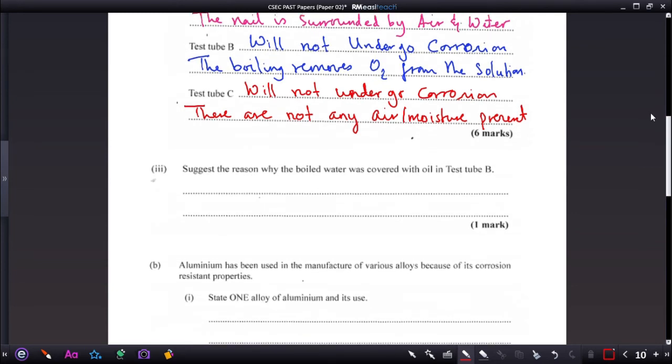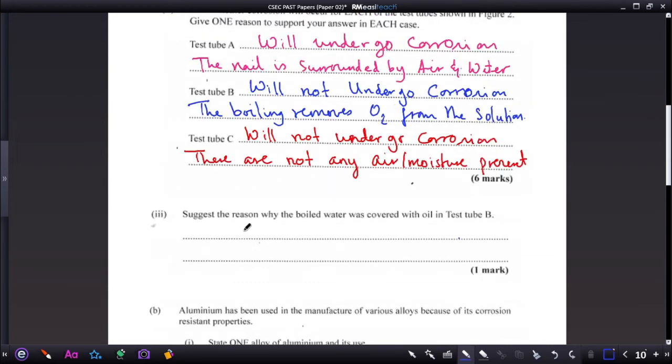Part 3. State the reason why the boiled water was covered with oil in test tube B. The oil acts as a barrier from oxygen entering the solution. So that's the reason for the oil on top of the water, sitting on top of the water there.